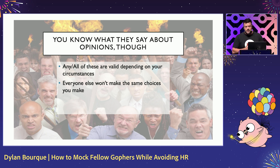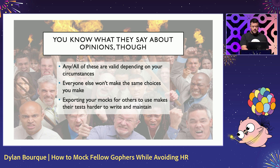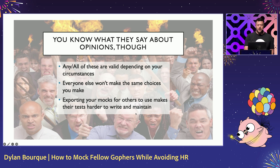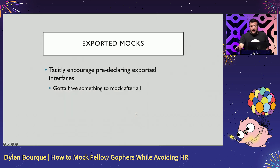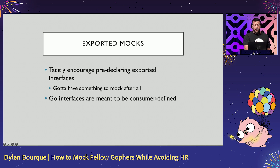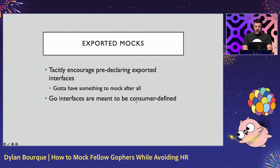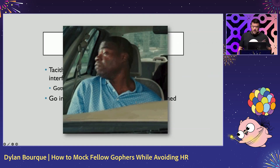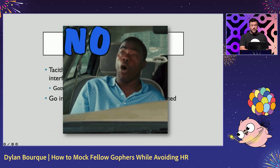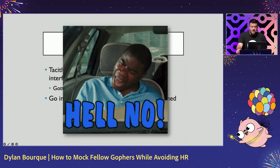Other teams will make their own choices, which brings us to the real nugget that I'm here to talk about. Over the next couple of slides, we'll talk about how exporting test mocks can actually create problems and what you can do about it. In order to export your mocks, you have to first define an interface — there has to be something for you to mock. The gotcha is that Go interfaces are really meant to be defined where the behavior is consumed and not by the services providing those behaviors.